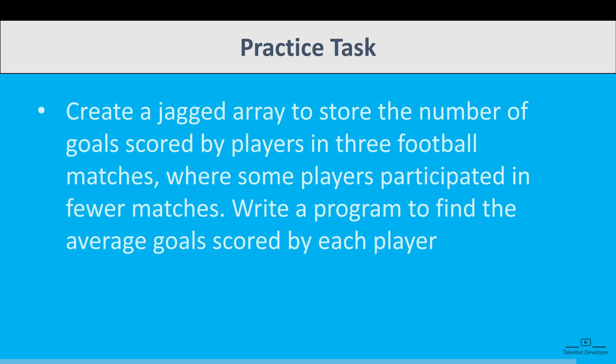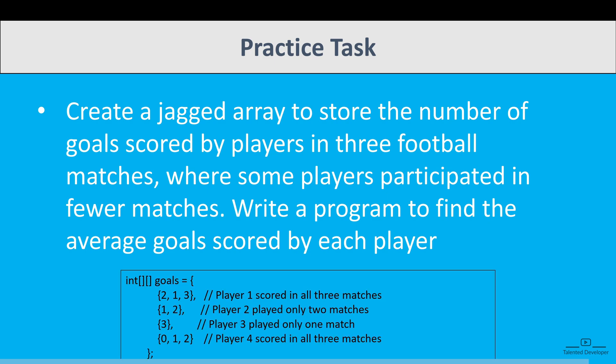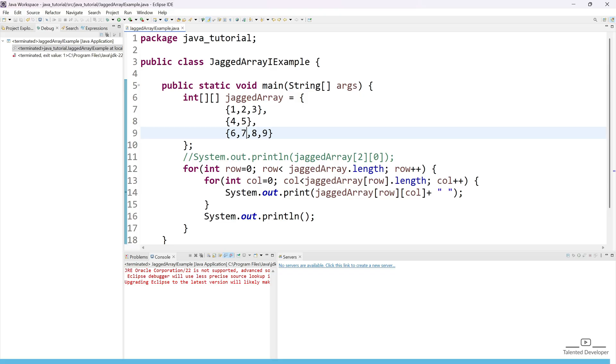I'm giving one more task to you. Create a jagged array to store the number of goals scored by players in three football matches, where some players participated in fewer matches. Write a program to find the average goals scored by each player. I know this is a little bit difficult, but let's try to write your solution in the comment. In the next video we are going to learn about common array operations.